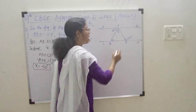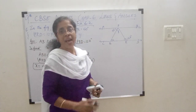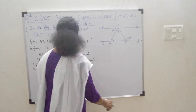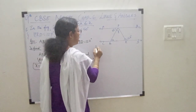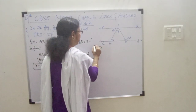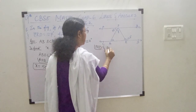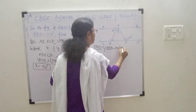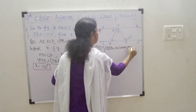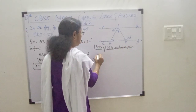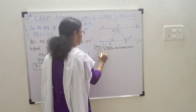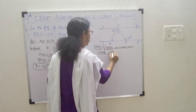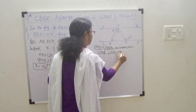This angle and this angle are linear pairs. These two angles are linear pairs, so you can find out the value. Angle PRD and angle PRQ are linear pairs — they are on a straight line. Since they are linear pairs, angle PRD plus angle PRQ is equal to 180 degrees.